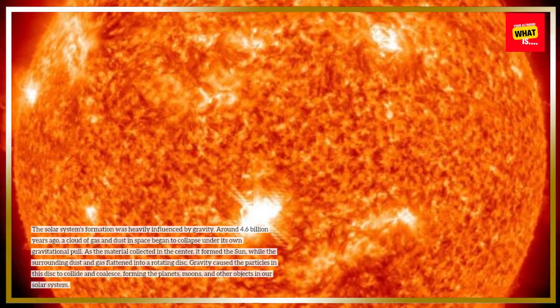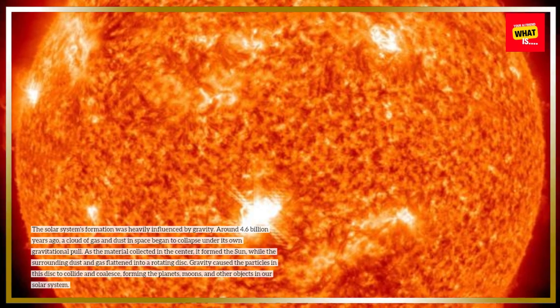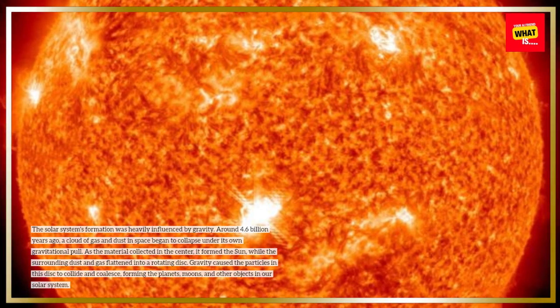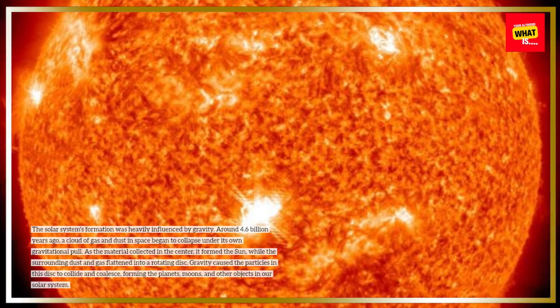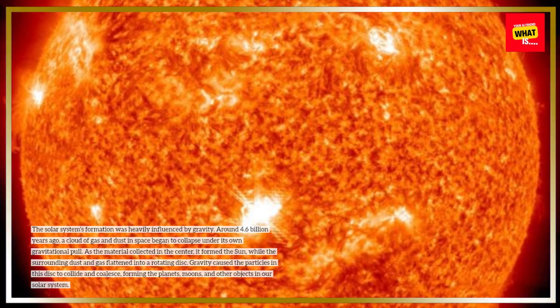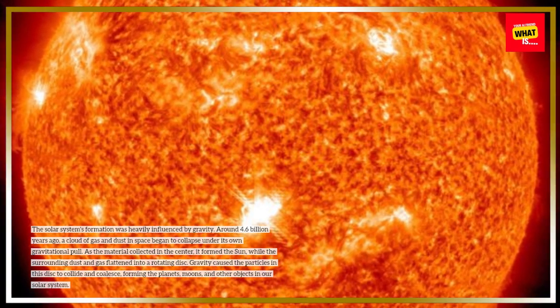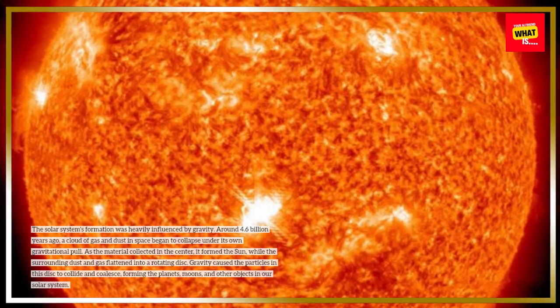Gravity caused the particles in this disk to collide and coalesce, forming the planets, moons, and other objects in our solar system.